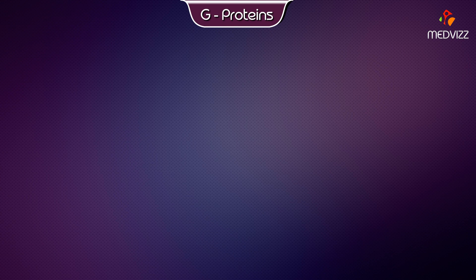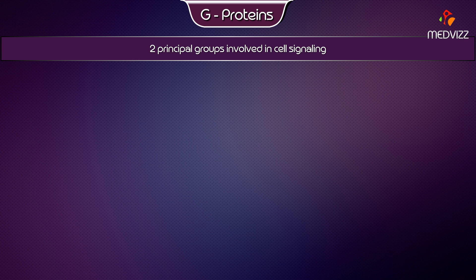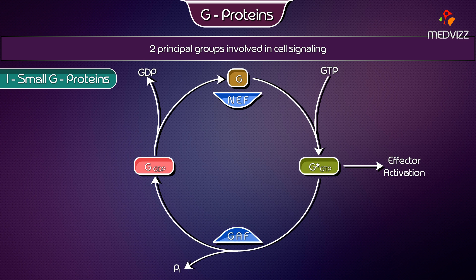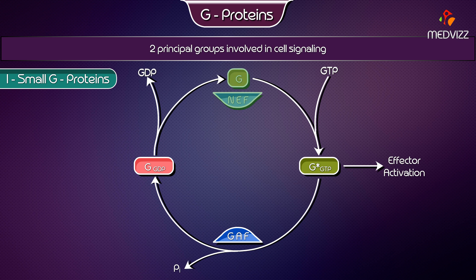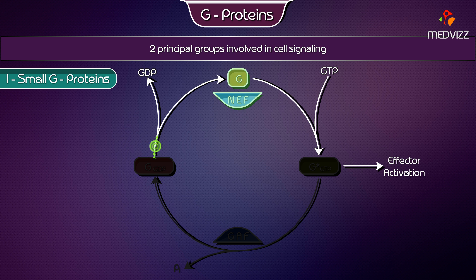G-Proteins can be divided into two principal groups involved in cell signaling. GTPase-activating proteins (GAPs) tend to inactivate small G-Proteins by encouraging hydrolysis of GTP to GDP in the central binding site. Guanine exchange factors (GEFs) tend to activate small G-Proteins by encouraging exchange of GDP for GTP in the active site.